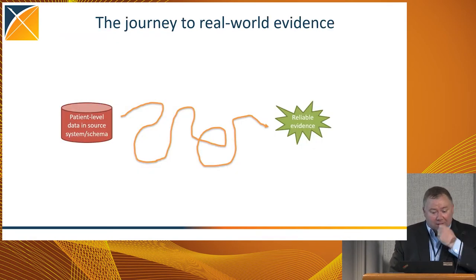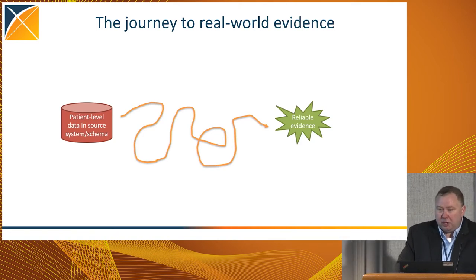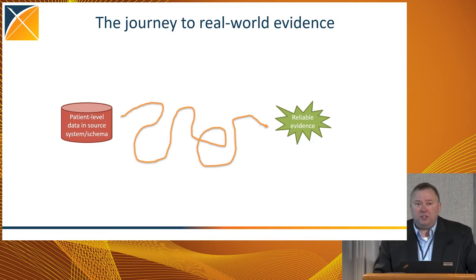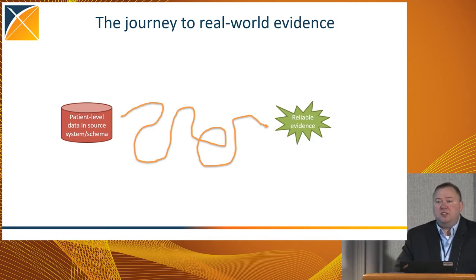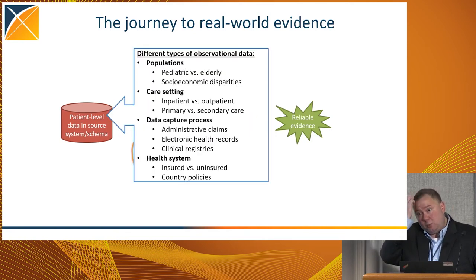So this journey from data to evidence — it's deliberate that we talk about this as a journey. The reality is that for most people right now, this journey is a meandering one. It is super hard to go from data to evidence. Particularly if we start talking all the way at the source data and the process we have to go through to standardize and normalize that data and get all the way to the point that we have evidence we consider to be reliable. When we talk about this journey, it's important to highlight that there is no one size fits all when we talk about data.